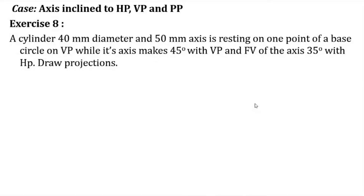One important thing to remember: the front view of the axis is making 35 degrees with HP — not the axis itself making 35 degrees. When the axis itself makes 35 degrees, that is more complicated and involves finding the locus of the second end of the axis. That type of problem we will encounter later. Here, what is given is that the front view of the axis makes 35 degrees with HP.